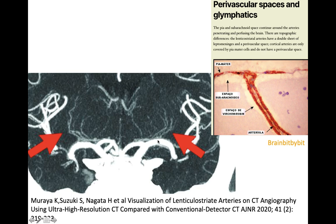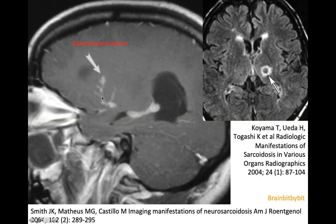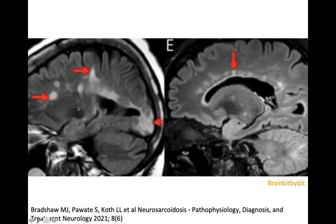Along the lenticostriatal arteries, there's a double sheet of leptomeninges and an extension of the perivascular space, in contrast to the cortical arteries. The leptomeningeal involvement in sarcoidosis can extend along these perivascular spaces, as you can also see in this patient. The parenchymal lesion in this patient is orientated along the perivascular space. Parenchymal lesions in sarcoidosis can have low T2 signal, which is helpful but not specific, because you can also see it in lymphoma and in cellular metastasis. The parenchymal lesions can also be orientated perivenular in a pattern resembling a demyelinating disease like multiple sclerosis.